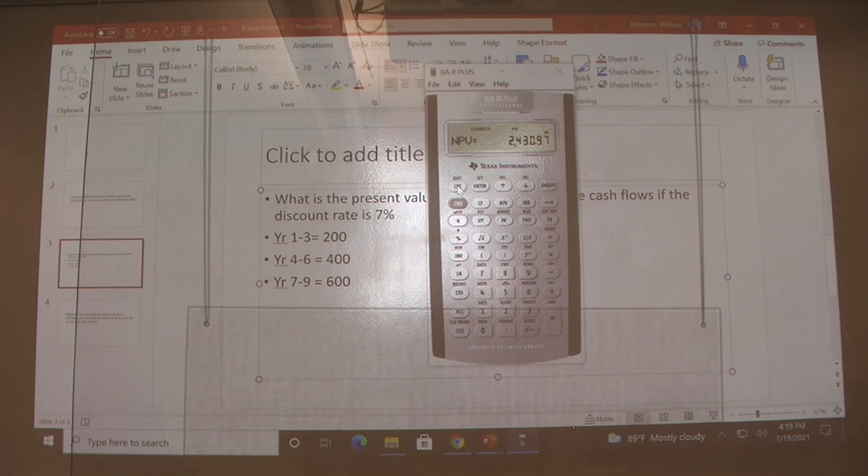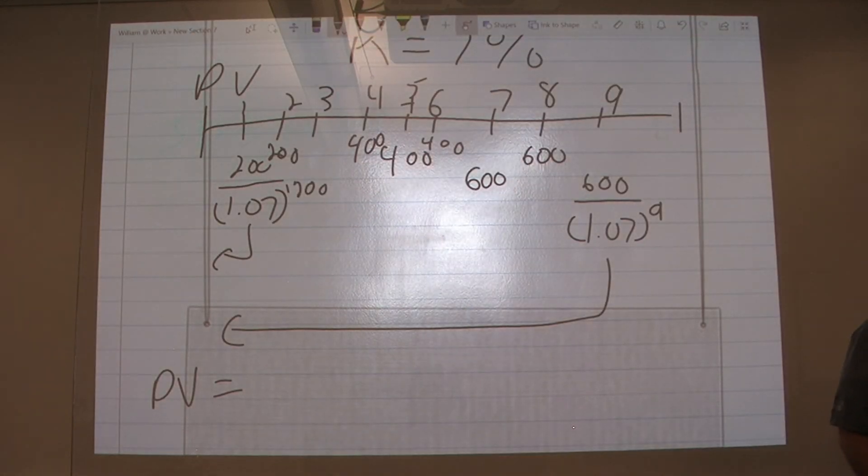Compute. So the present value of those cash flows is $2,430.97.